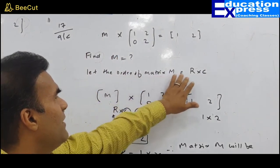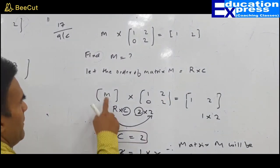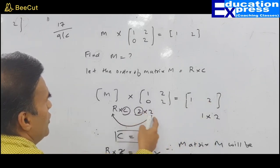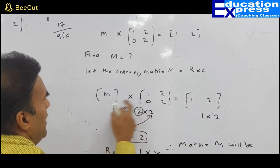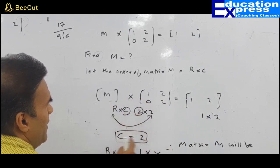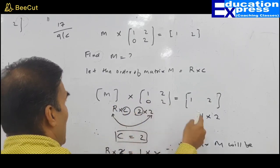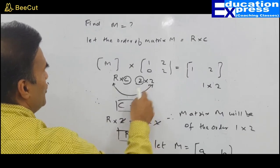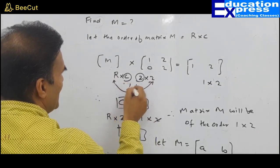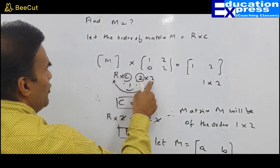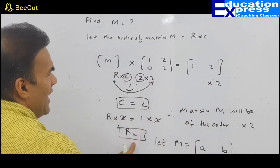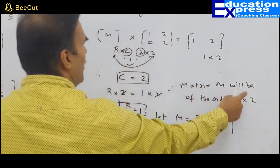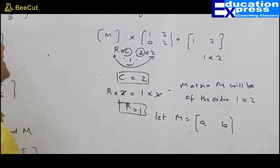Row into C must equal the resulting matrix order. C equals 2, and R into 2 equals 1 into 2, so 2 cancels and R equals 1. That means matrix M will have 1 row and 2 columns. Once you determine this, the question is essentially done. Since we know matrix M is order 1 into 2, let matrix M be A and B.